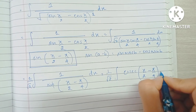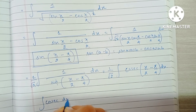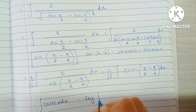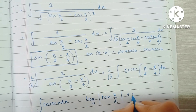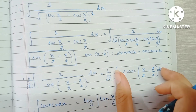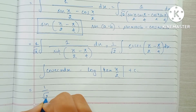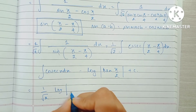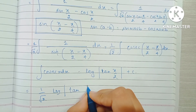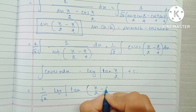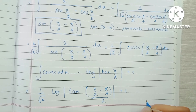We have a direct formula for the integration of cosec x dx, which is log|tan(x/2)| + c. So we apply this: we get (1/√2) times log|tan((x/2 minus π/4) divided by 2)| plus c.